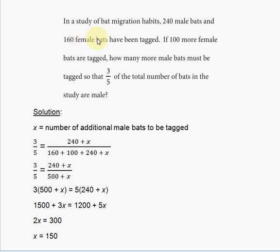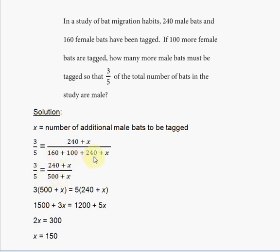160 is the original number of female bats, 100 is the additional female bats, 240 is the original male bats, and X is the additional males. So we rewrite it: three-fifths equals (240 plus X) divided by (500 plus X), because 160 plus 240 plus 100 equals 500.